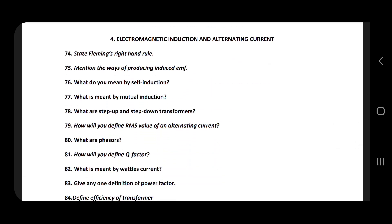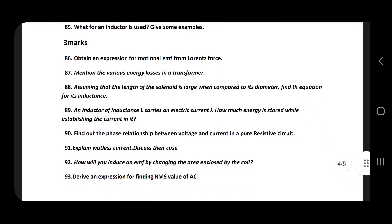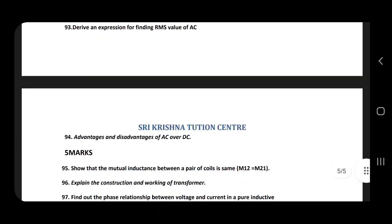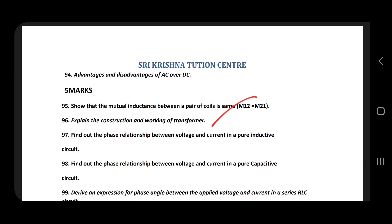The fourth lesson: Fleming's Right-Hand Rule, method of producing induced EMF, RMS value of AC, phasor, Q factor, wattless current, efficiency of transformer, power factor, and energy losses — confirmed 3-mark. Energy stored in inductor: AC or DC — the 5-mark is the transformer and RLC circuit.